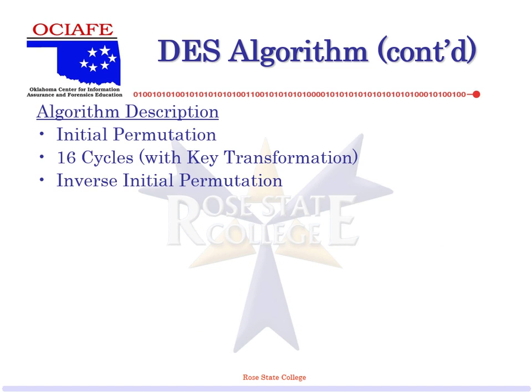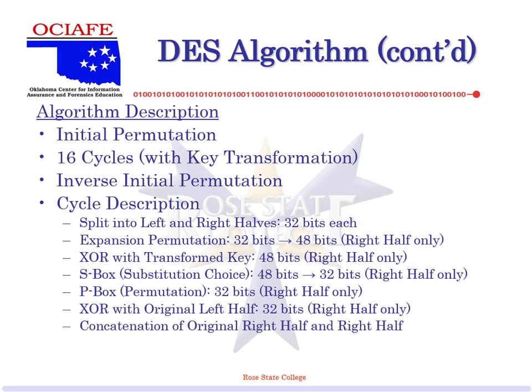How does that actual cycle work? We take the 64 bits and break it in half — two halves of 32 each. We don't do anything with the left side right away. We take that 32-bit right side and expand it to 48 bits, then XOR it with a key. Then we run it through a substitution box, which takes it back from 48 down to 32. Then we run it through a permutation box. Then we XOR it with the original left-hand side and put them back together.